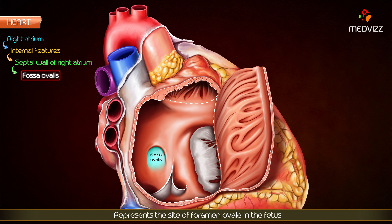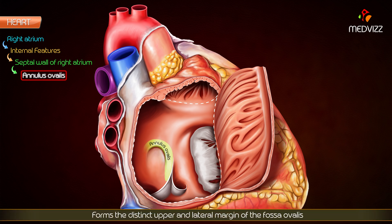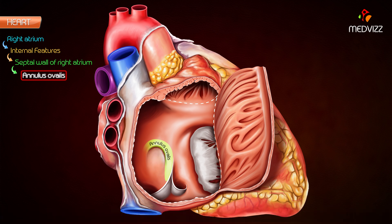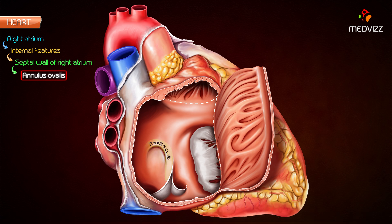The fossa ovalis represents the site of the foramen ovale in the fetus. The annulus ovalis, also known as the limbus fossa ovalis, forms the distinct upper and lateral margin of the fossa ovalis. It represents the free edge of the septum secundum. Inferiorly, the annulus ovalis is continuous with the left end of the valve of the inferior vena cava.